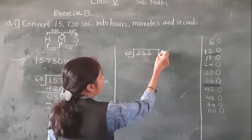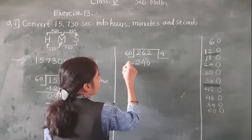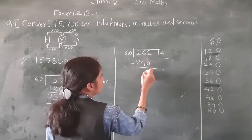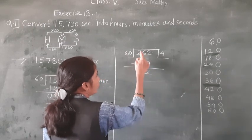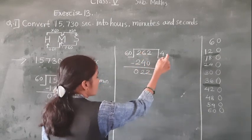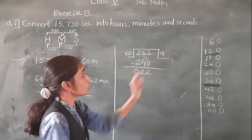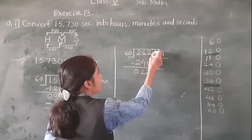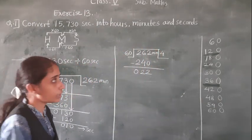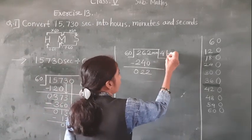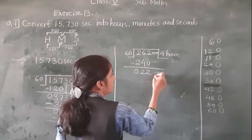So 60×4=240. 2 minus 2 is 0, 6 minus 4 is 2, 2 minus 2 is 0. So what we got? We got hours. Because these are the minutes — we converted minutes into hours. So these are 4 hours, and 22 are the remaining minutes.